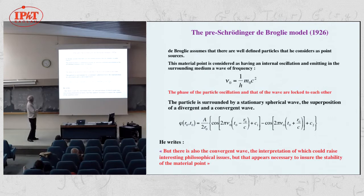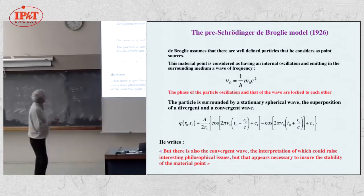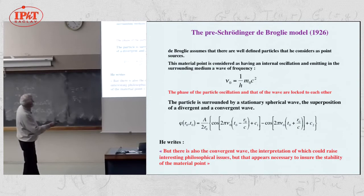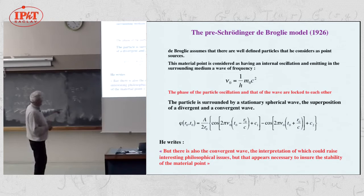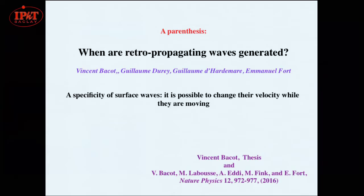De Broglie, in 1926, had this idea that electrons were associated with waves and these waves were standing waves. He had this Compton frequency proper to the particle, and the idea that there were two waves — one propagating outward and one propagating inward. He wrote that there is some philosophical issue about the advanced wave coming from infinity to converge at the right point.